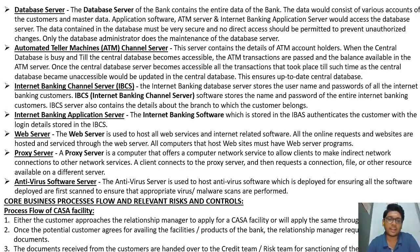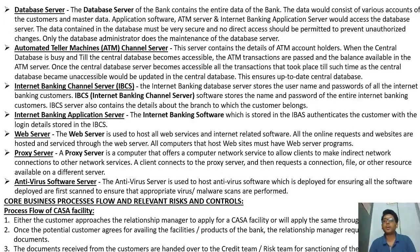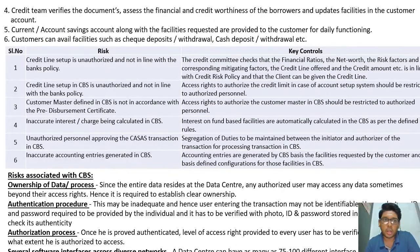The process flow of the CASA facility: the customer approaches the relationship manager to apply for CASA facility or through internet banking; once the customer agrees, the relationship manager requests relevant documents; documents received from the customer are handed over to the credit team for checking credit limits; the credit team verifies documents and checks creditworthiness of the borrower, then updates the facility in the customer account; the current or savings account along with the requested facilities are provided to the customer for daily functioning.